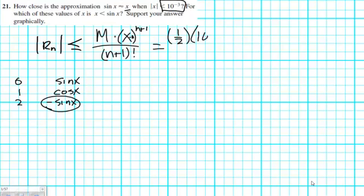Let's go with 10 to the negative 3 to the second power. And then it's going to all be divided by, yeah, that's 2, and then 2 factorial. 2.